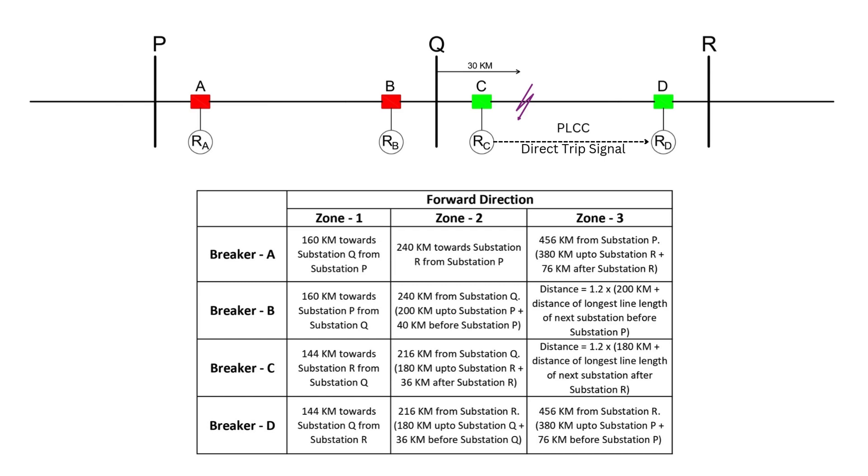Relay A will also detect this fault within its zone 2 range, but since the fault is cleared by breaker C, breaker A won't trip unless the fault persists for 350 milliseconds. Relay B will not respond as it is a reverse zone fault.